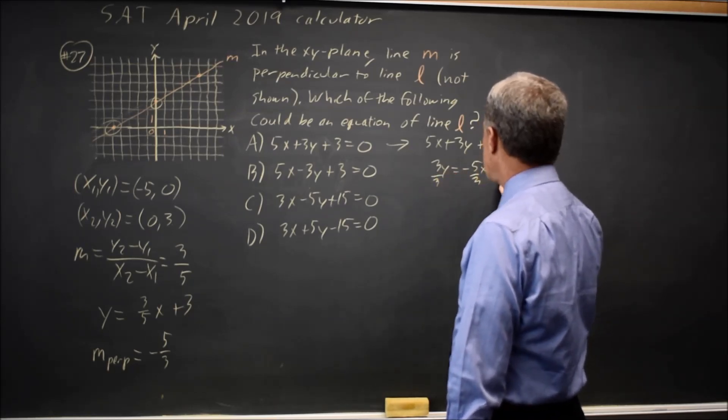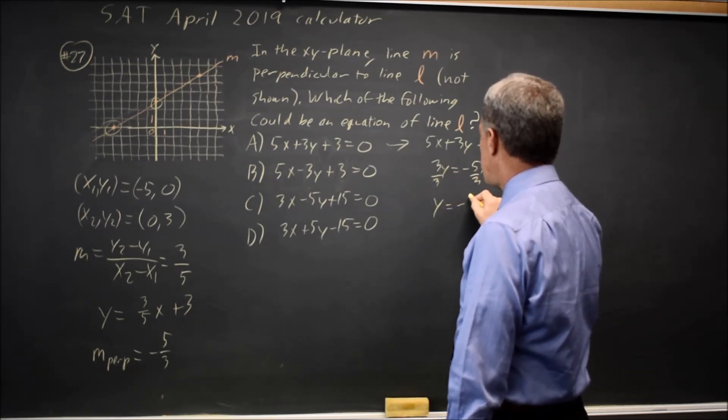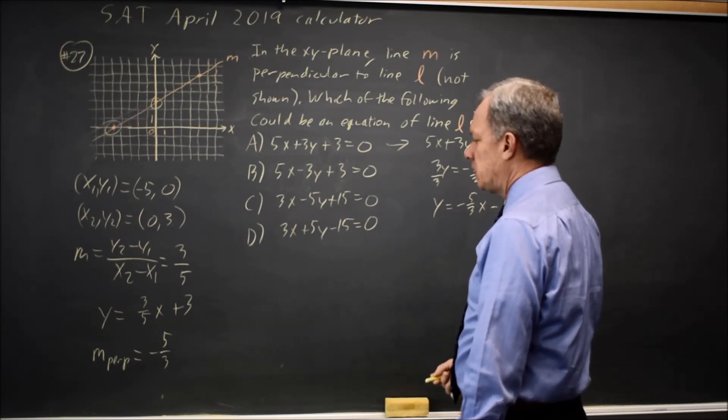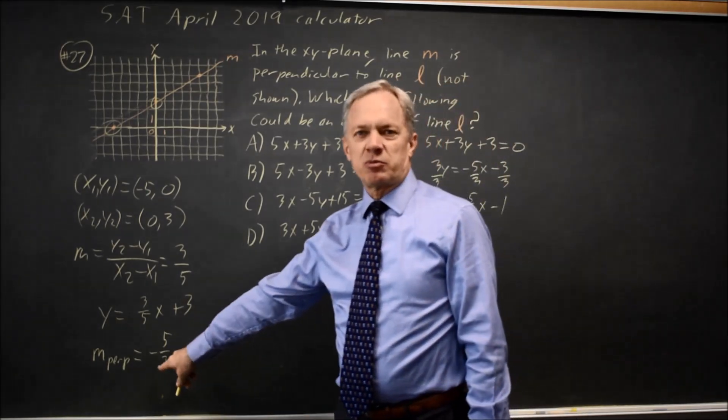Divide both sides by 3. And I get y equals negative 5 thirds x minus 1. And that is the correct slope for a perpendicular line.